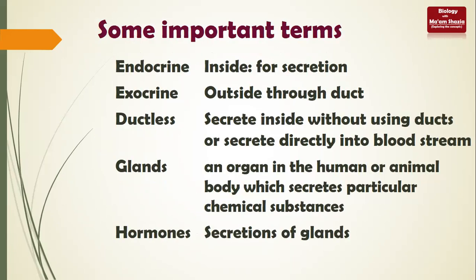Some important terms: endocrine means secretions inside - 'endo' means inside and 'crine' means secretions. Exocrine means outside - 'exo' means outside and 'crine' once again means secretions. So endocrine means secretions within the body, and exocrine secretions can be outside the body. The next term is 'ductless' - a duct means a tube.